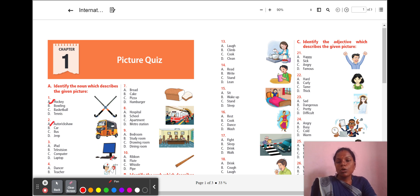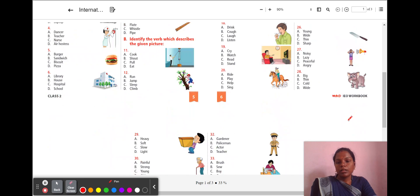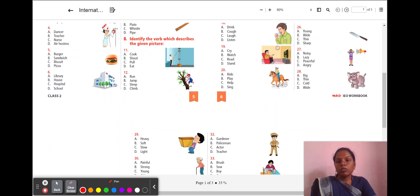Let's move to the second question. Look at this picture. What is the name of this vehicle? A. Auto rickshaw B. Car C. Bus D. Jeep. The answer is A. Auto rickshaw. Look at this third image. What does it represent? A. iPad B. Television C. Computer D. Lamp. Yes, it is a computer.